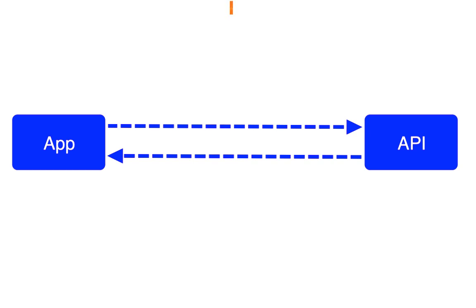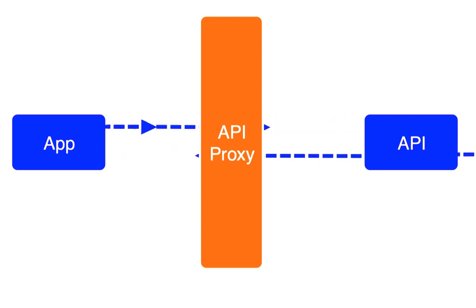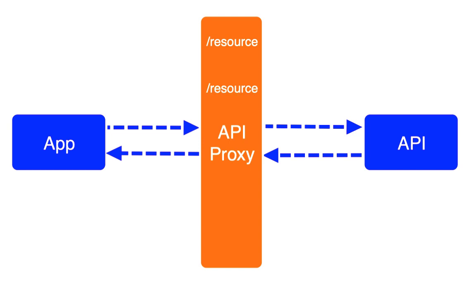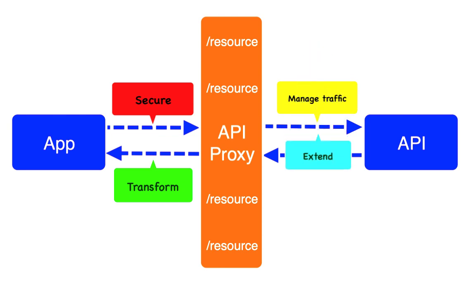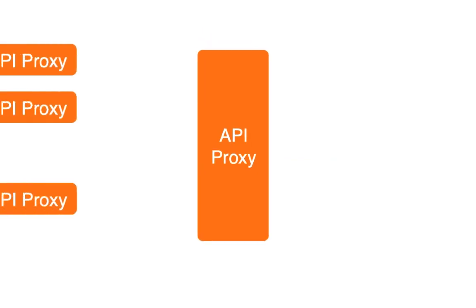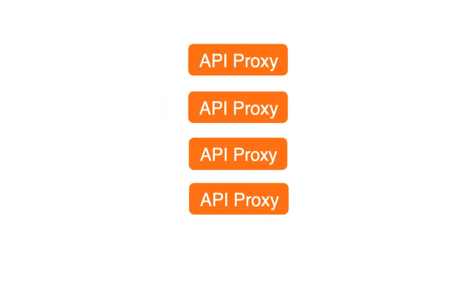First, you'll create an API proxy which serves as a facade between your API and the apps calling it. You'll also define resources that model the structure of your API's resources to give you fine-grained control. Then you'll attach any number of out-of-the-box policies along the proxy flow to take care of securing, transforming, and mediating API messages.